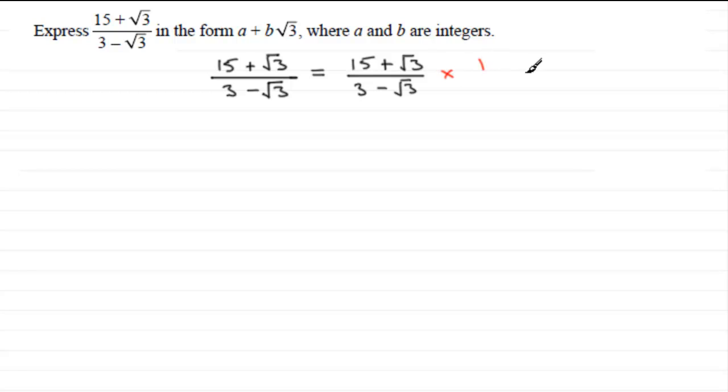So what I've shown you in the past is that when we've got two terms in the denominator here, what we've got to do is switch the sign. So for something like this we create our 1 by multiplying top and bottom by 3 + √3.